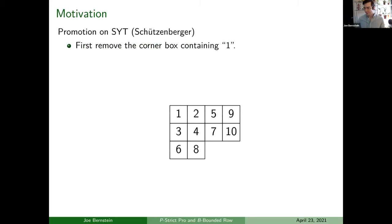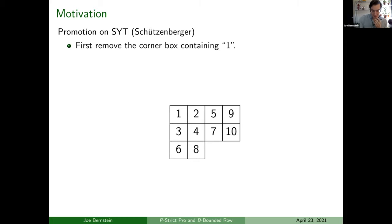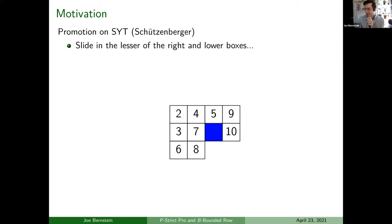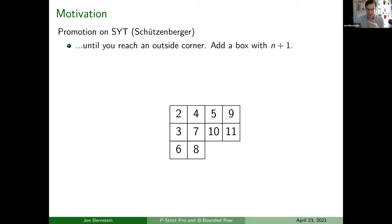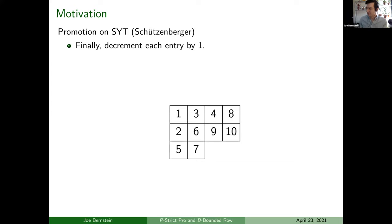So first we have an action on Standard Young Tableaux called Promotion, which we saw in the last talk. Traditionally this is defined using Jeu de Taquin slides — Jeu de Taquin is that 15-number puzzle game, except in French. What we do is remove the box containing one, then slide in the lower of the right or lower element: slide it into the two, into the four, and so on until we reach an outside corner. We fill that outside corner with n+1, then subtract everything by one. That's Promotion.